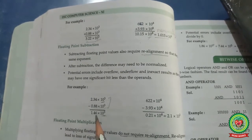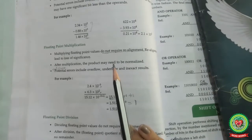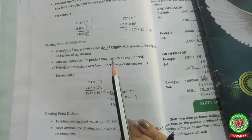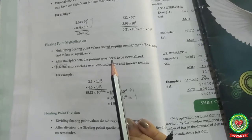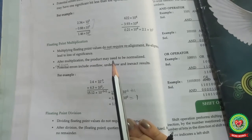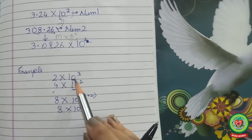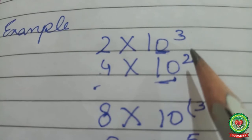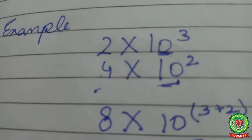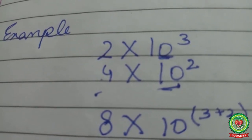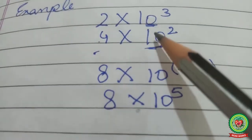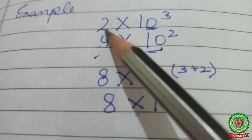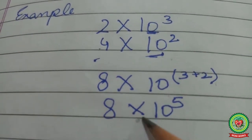Next topic is floating point multiplication. Floating point multiplication does not require realignment. When the base is the same, the exponents are added. For example: 2 × 10³ multiplied by 4 × 10² — since the base is the same (10), we add the exponents (3 + 2 = 5) and multiply the mantissas (2 × 4 = 8), giving the answer 8 × 10 raised to power 5.